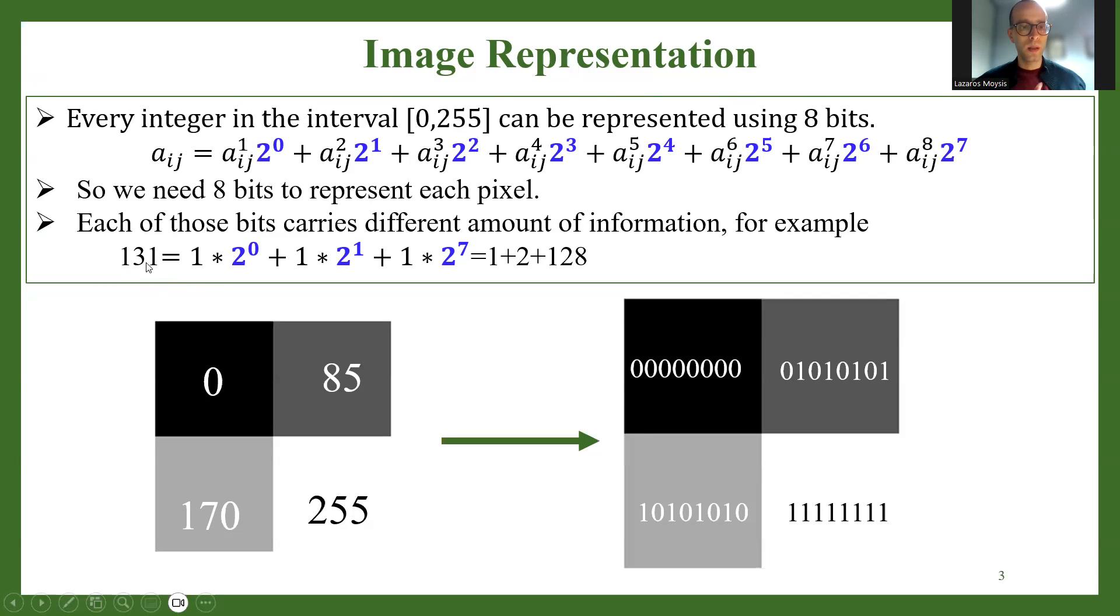For example, the value of 131 is 1 times 2 to the 0 plus 1 times 2 to the 1 plus 1 times 2 to the 7th, and all the other coefficients are 0. That's 1 plus 2 plus 128. So any sort of image, any matrix of integers, can easily be translated into binary representation by taking each different integer and transforming it into its binary format. So 0 becomes 8 zeros, 255 becomes 8 ones, 85 becomes this number, 170 becomes this number.